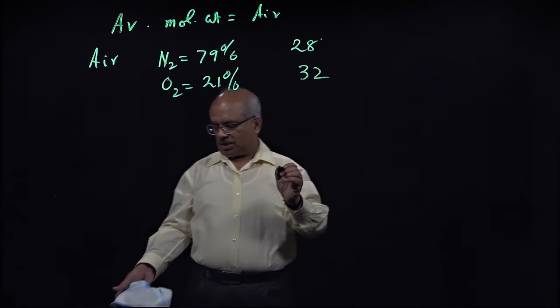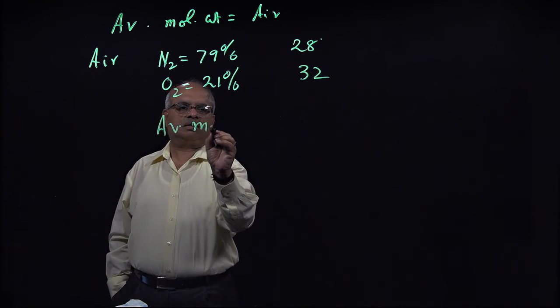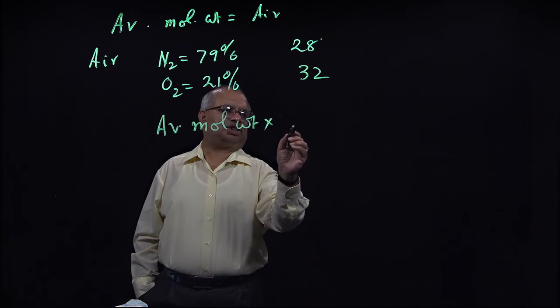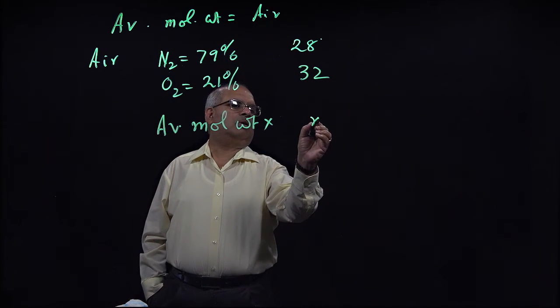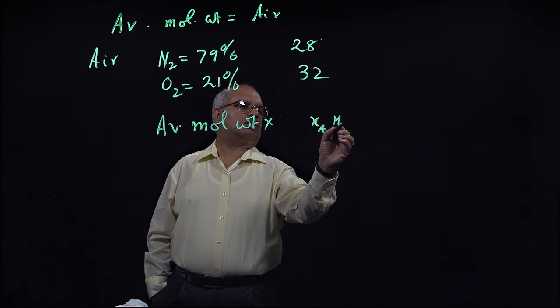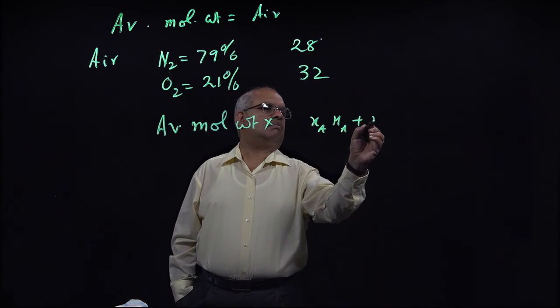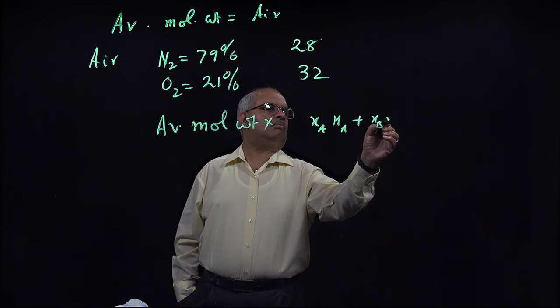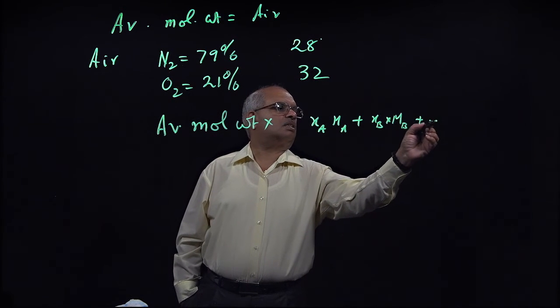So average molecular weight is actually mole fraction of each of these components. It's A times molecular weight of A plus mole fraction of B times molecular weight of B plus and so on.